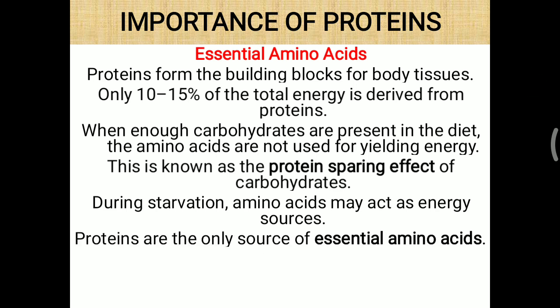Proteins are the only source of essential amino acids. Protein is basically made up of 20 amino acids, which based on nutritional importance are divided into three categories: essential, non-essential, and semi-essential. A total of eight amino acids are purely essential, which are not synthesized in our body. Two are semi-essential, whose requirement increases during the growing age. Non-essential amino acids can be easily synthesized inside the body.